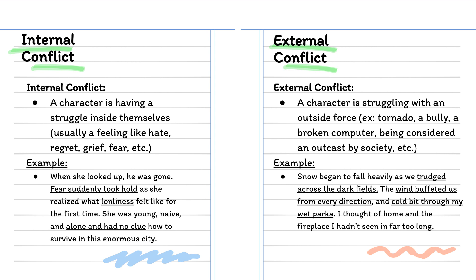Now let's look at external conflict. An external conflict is when a character is struggling with some sort of outside force, such as a tornado, a bully, a broken computer, or even being considered an outcast by society. Here's an example from a text: 'Snow began to fall heavily as we trudged across the dark fields. The wind buffeted us from every direction and cold bit through my wet parka. I thought of home and the fireplace I hadn't seen in far too long.' Here we can see the external conflict has to do with the weather — dark fields, heavy winds, cold, and rain. The character is struggling with a force of nature.